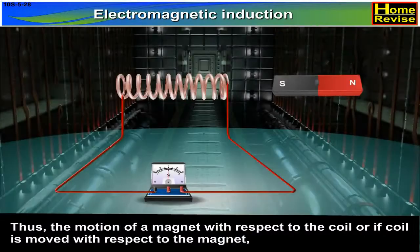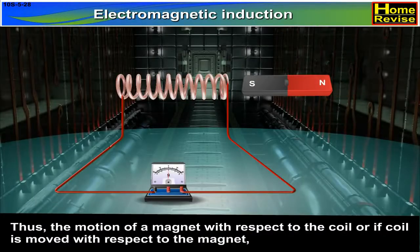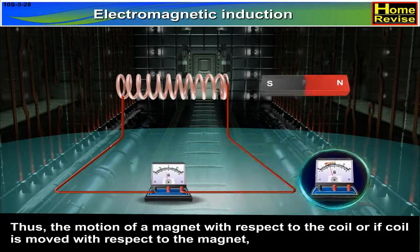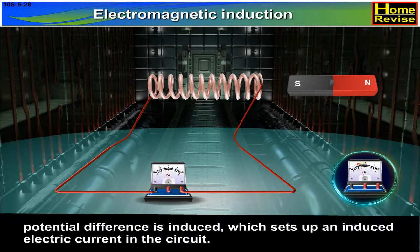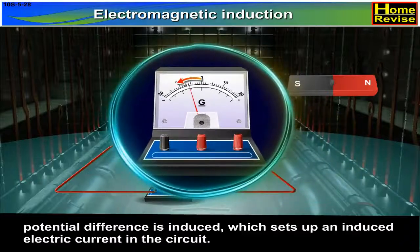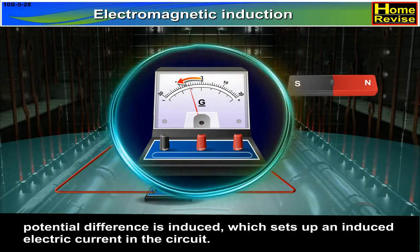Thus, the motion of a magnet with respect to the coil, or if coil is moved with respect to the magnet, potential difference is induced which sets up an induced electric current in the circuit.